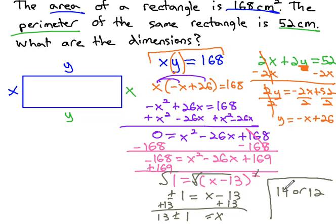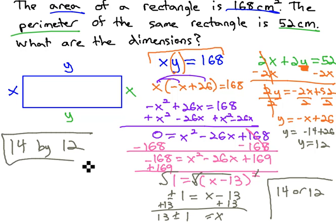If x is 14, let's plug that in to find y. y is equal to negative 14 plus 26, which means y is equal to 12. That means we have a 14 by 12 rectangle.